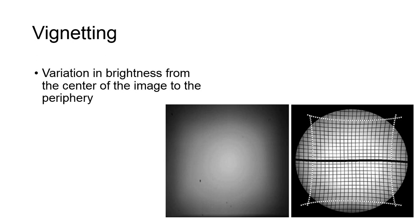Vignetting occurs when a homogeneous x-ray field interacts with the output phosphor, and there is a variation in brightness between the center of the field and the periphery at the output image.